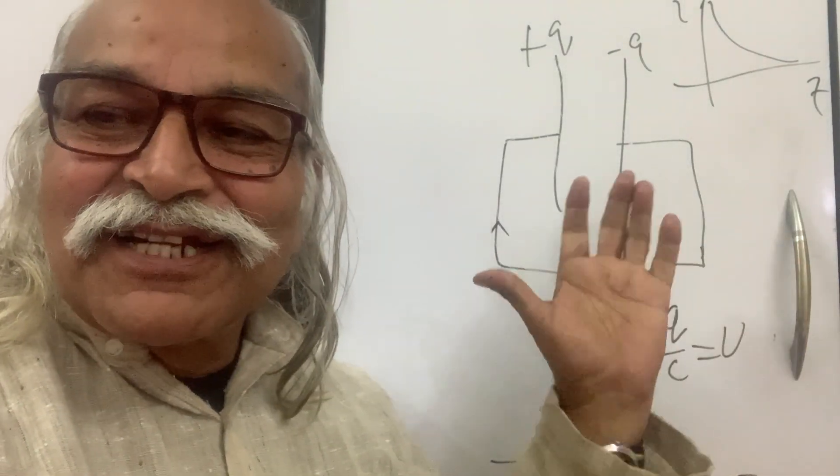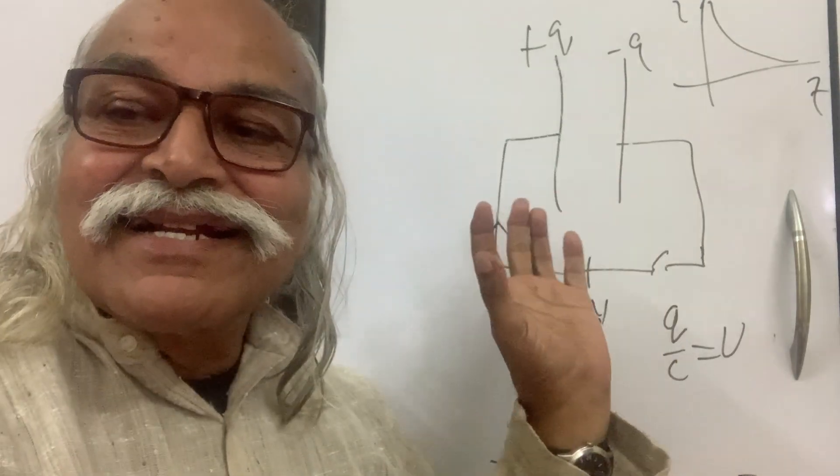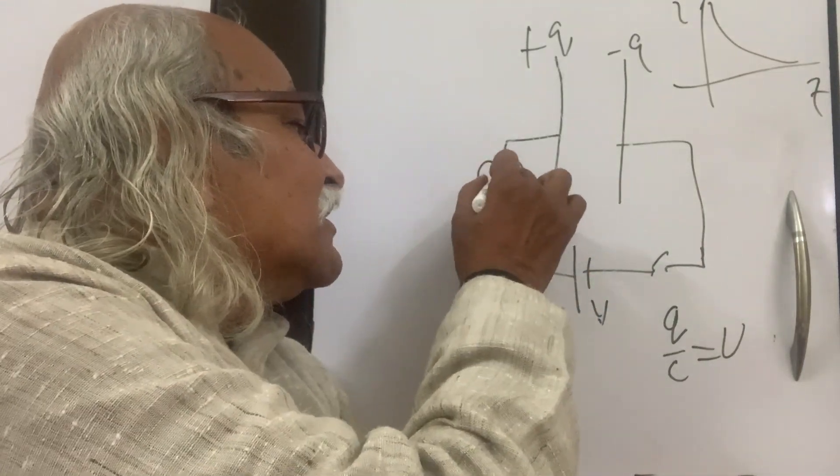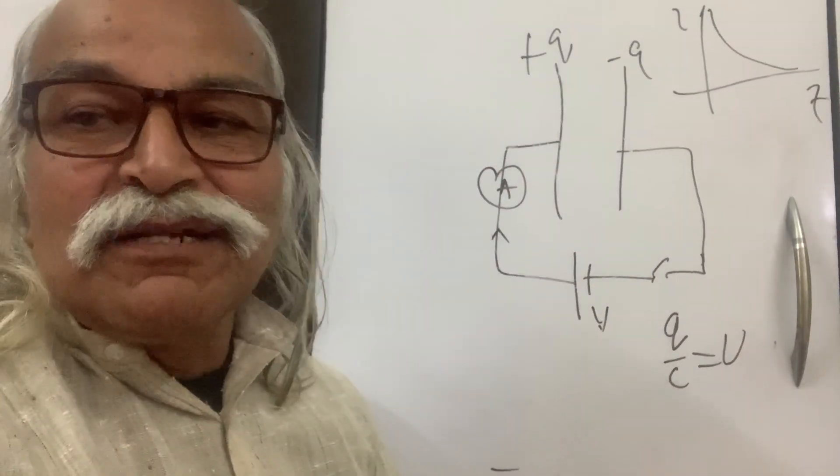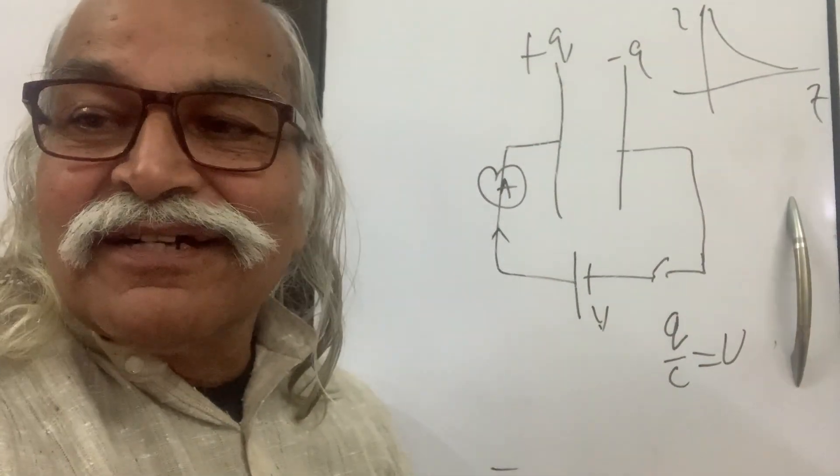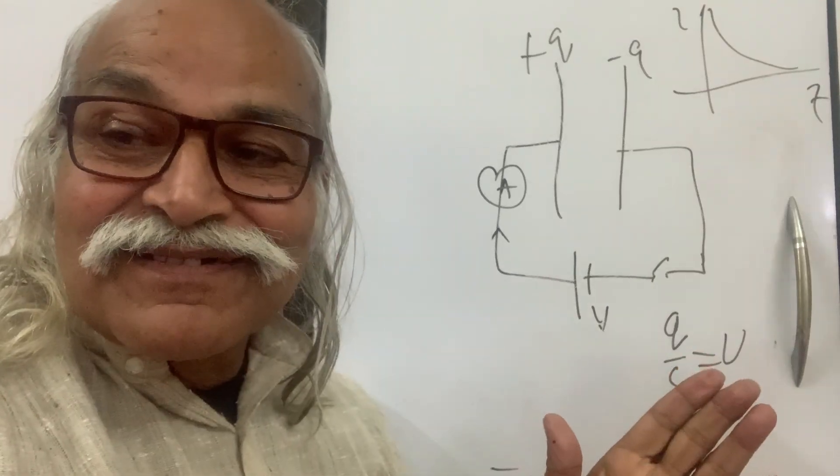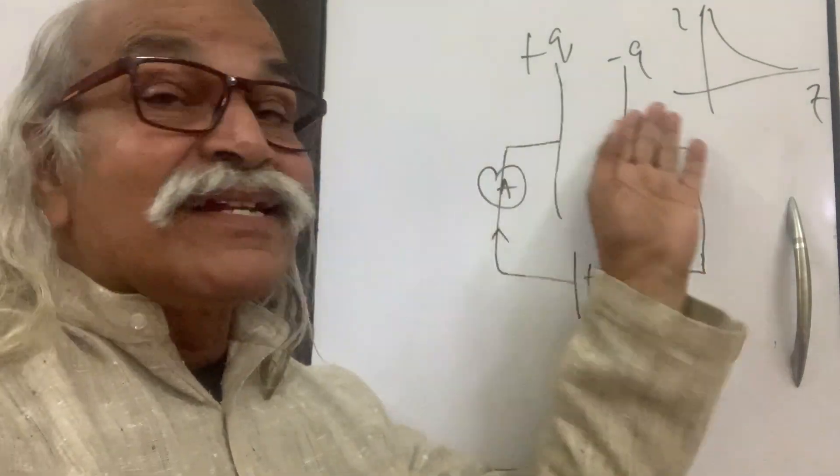So that is how the current flows. If you put an ammeter here, yes, it will show the current. You can put a multimeter here in a current measuring mode or an ammeter, it will show the current. So we say that there is a current in the circuit.